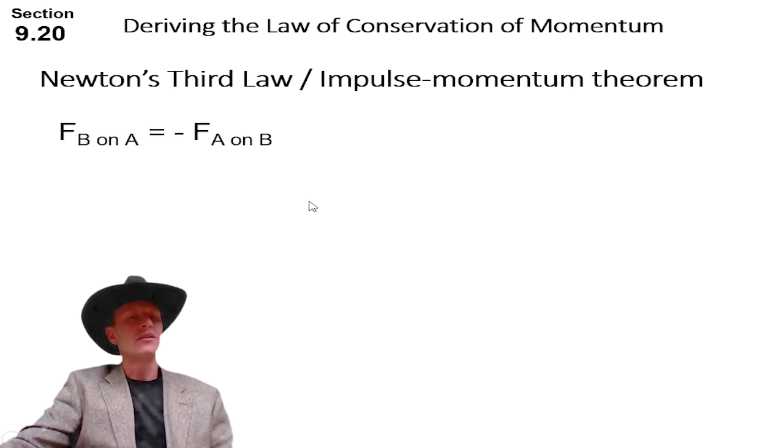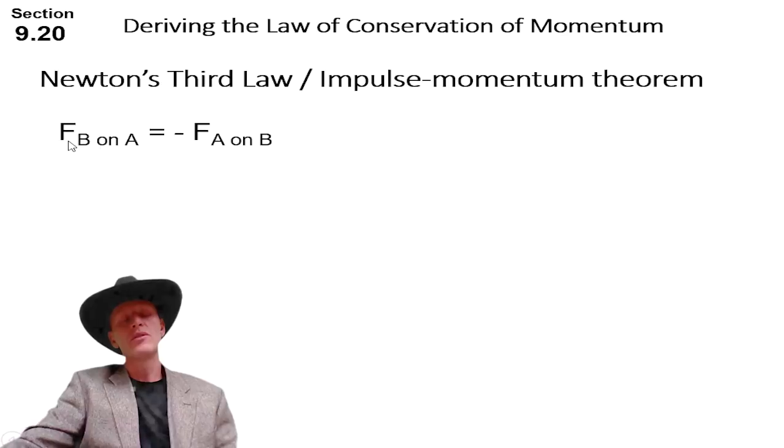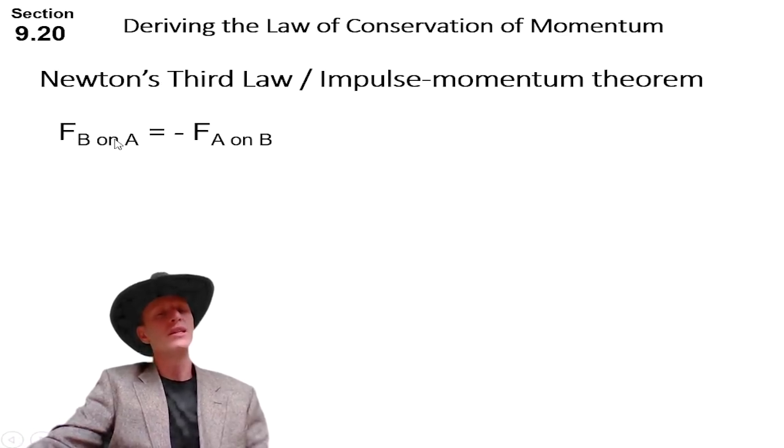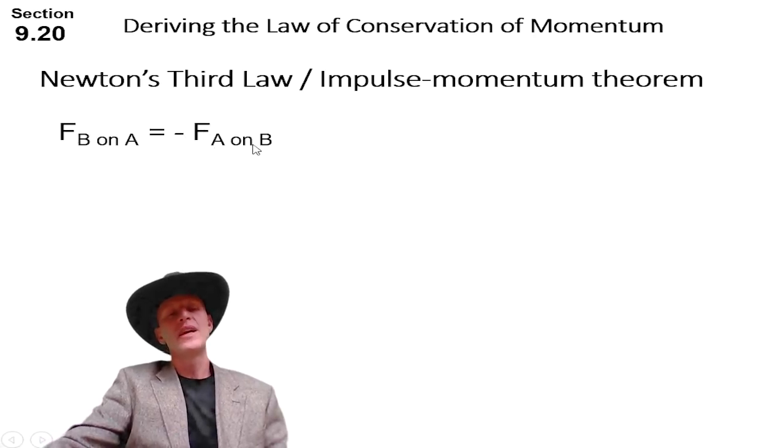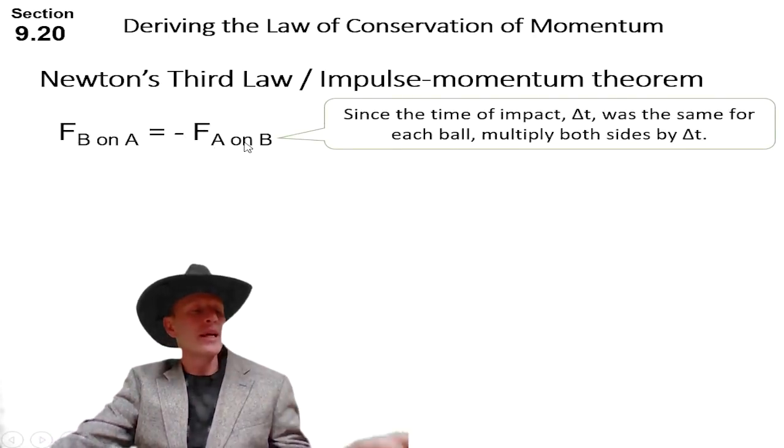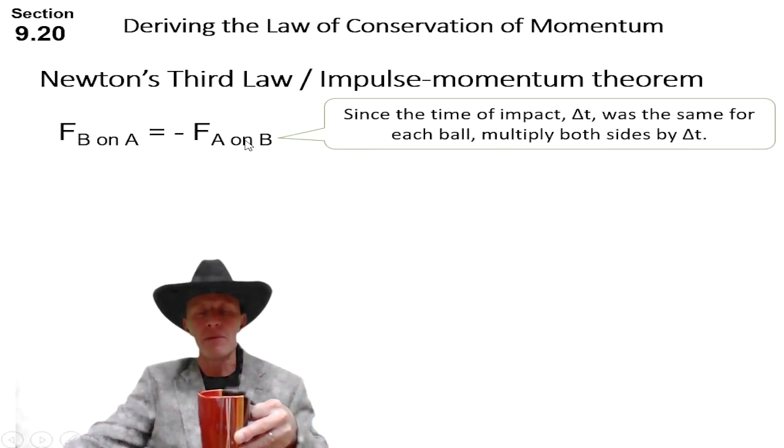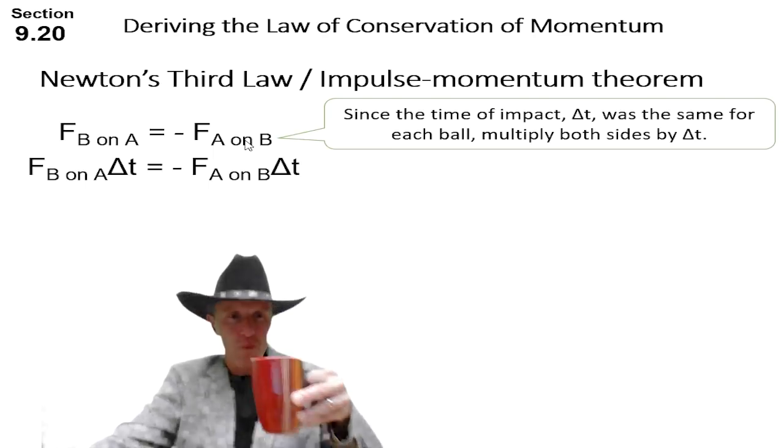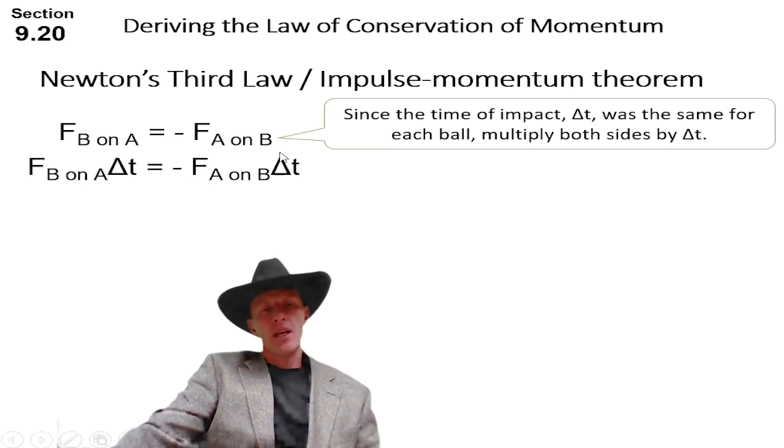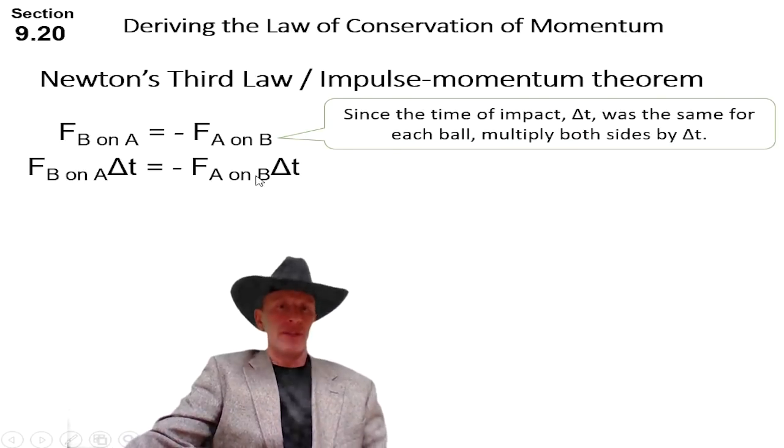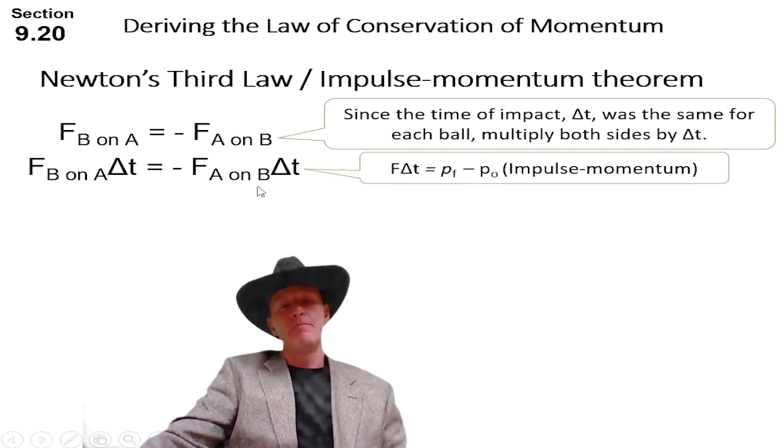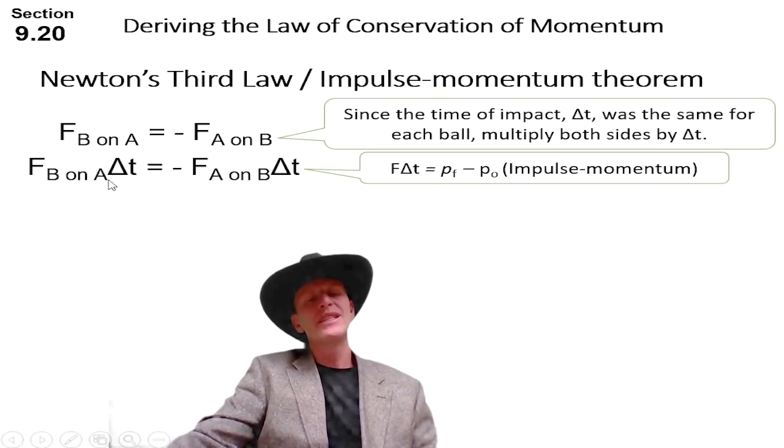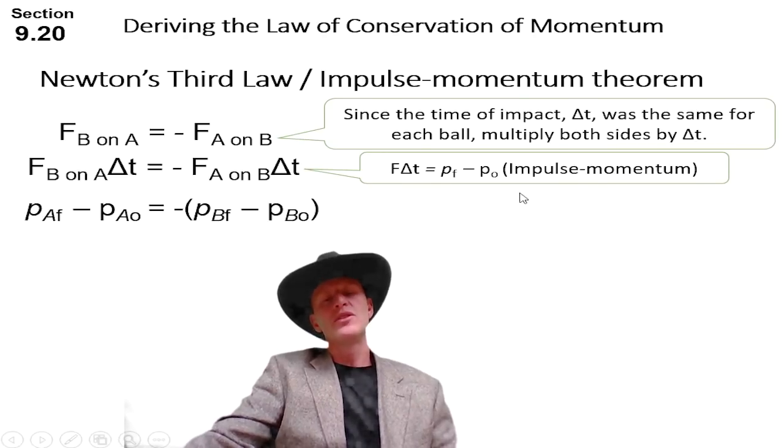So if you focus on a collision we can apply Newton's third law. Newton's third law says those forces are equal in size and opposite directions. So we got the force of B on A is equal to the negative force of A on B. Now they were making contact for the same amount of time, so we can multiply both sides by delta t. So now we have this equation. What's that look like? That looks like the impulse momentum theorem. That looks like impulse right there on both sides. Remember impulse is equal to the change in momentum.